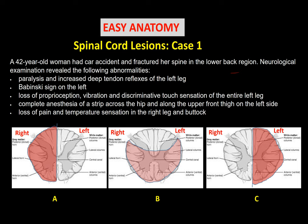Neurological examination reveals the following abnormalities. First, paralysis in the left leg. By looking at the deep tendon reflexes, there is increased reflexes — hyperreflexia — and the Babinski sign on the left side is positive. This tells you the paralysis is upper motor neuron paralysis located in the left leg. There is also loss of proprioception, vibration, and discriminative touch sensation of the entire left leg.